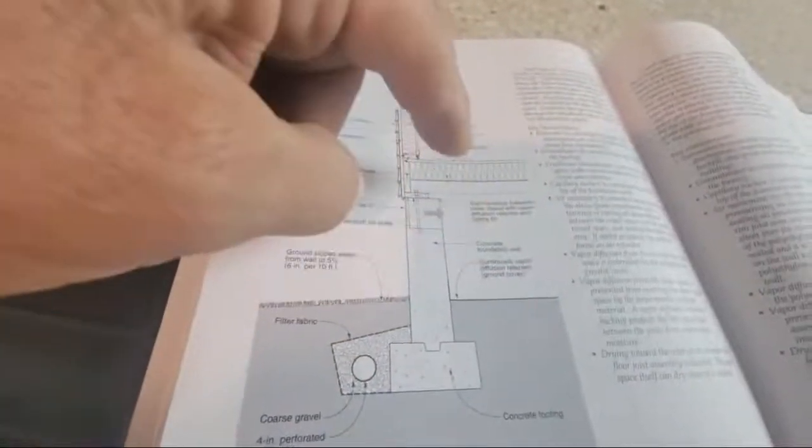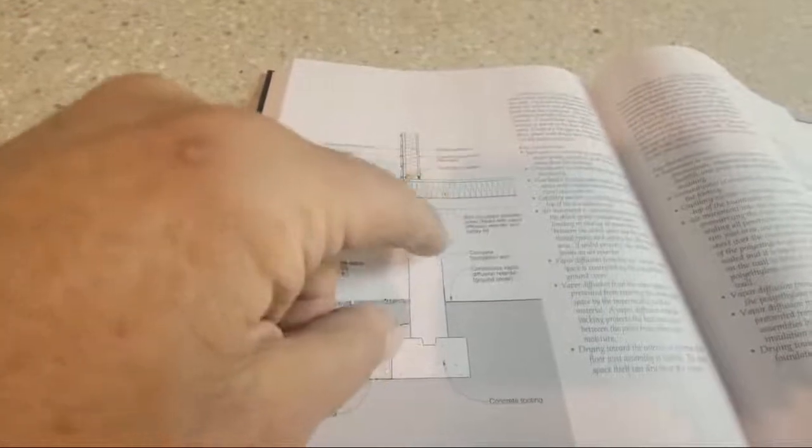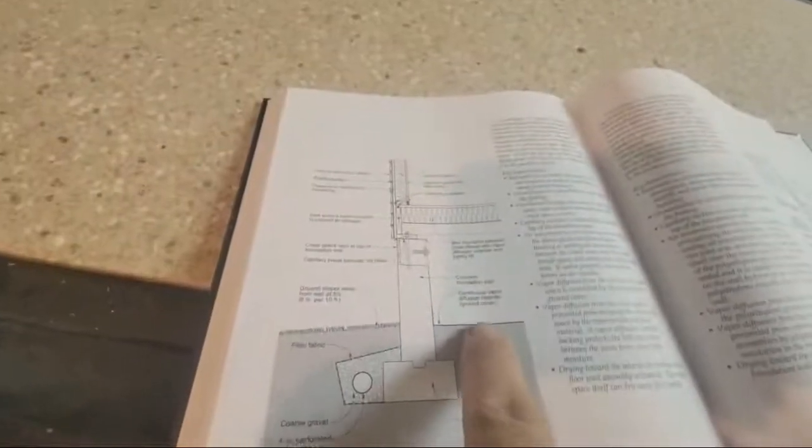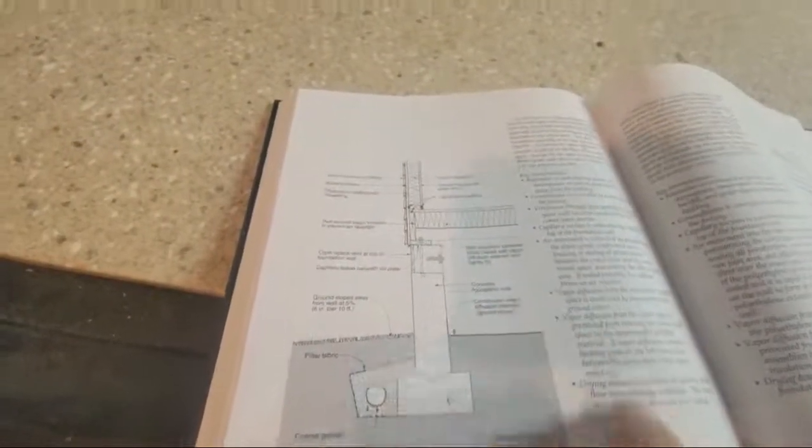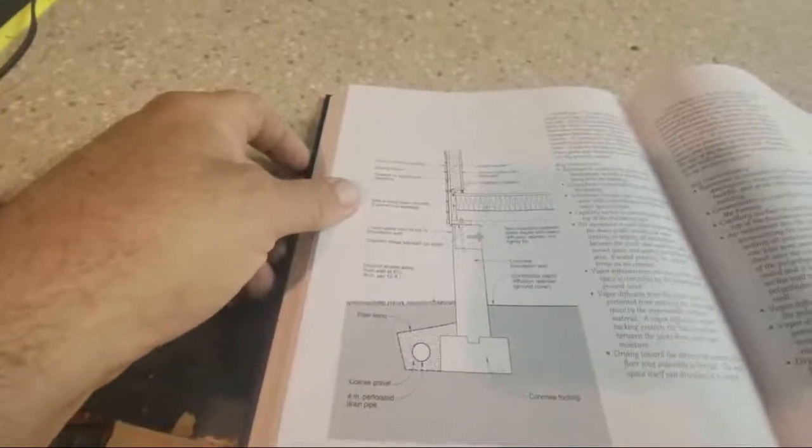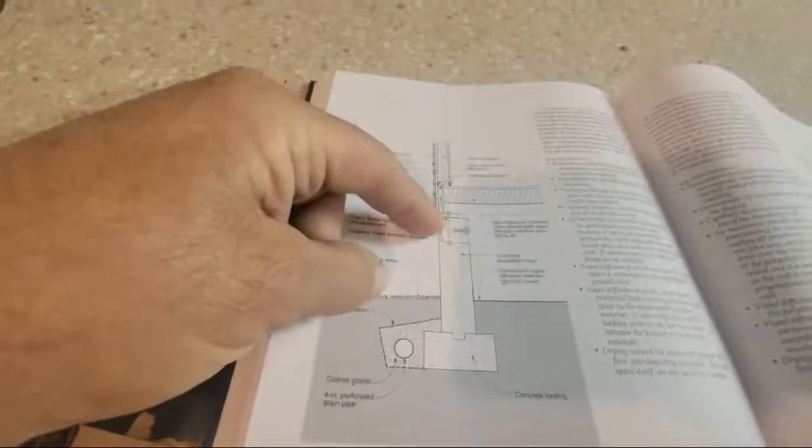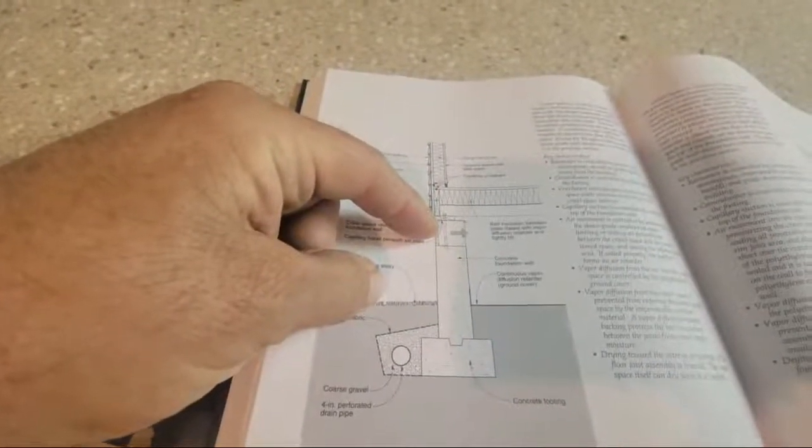The important thing on this one is the insulation is up here, not here, but you still have a vapor barrier to keep moisture from coming up. Each crawl space is different, so this is considered a vented crawl space.